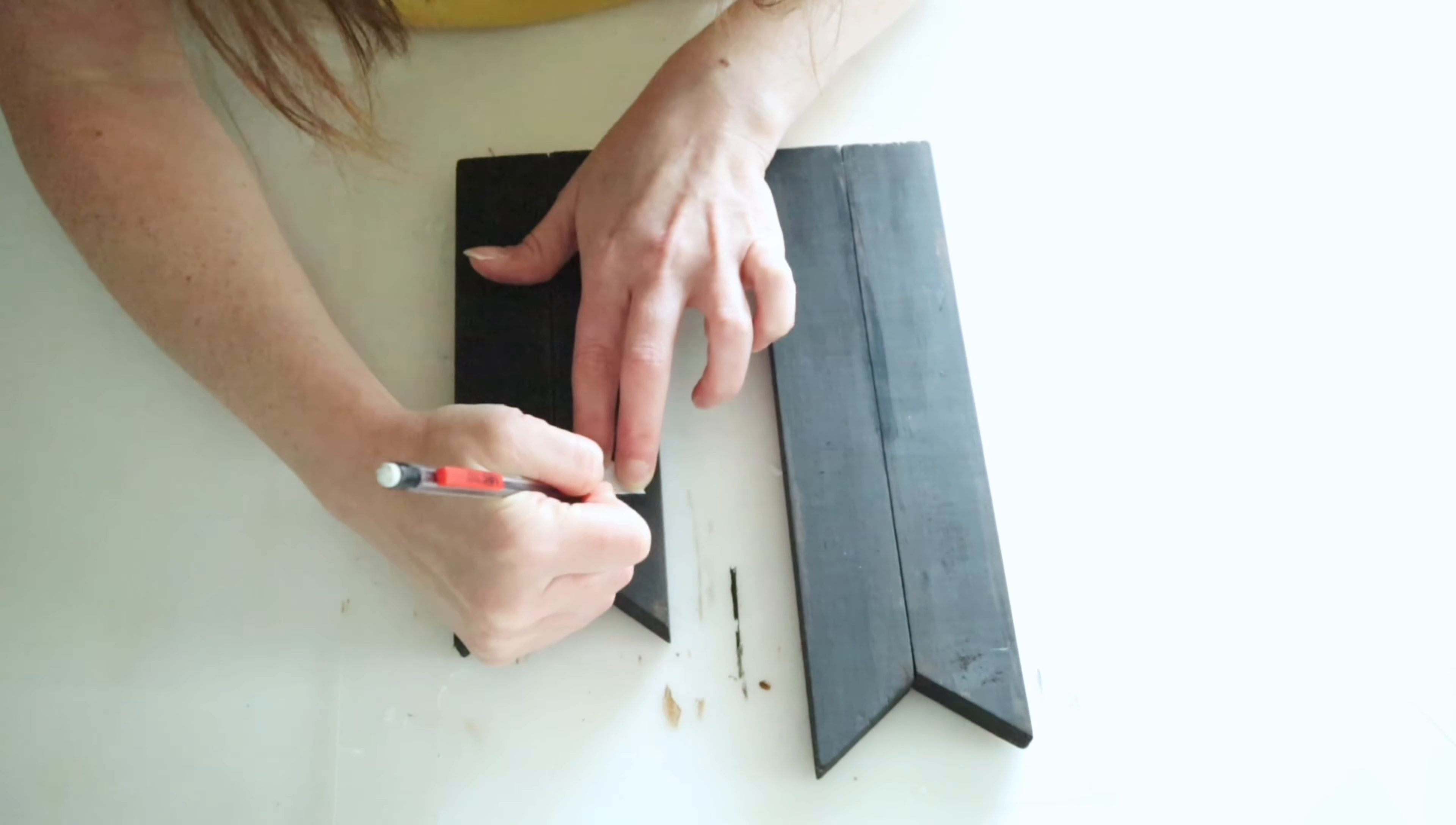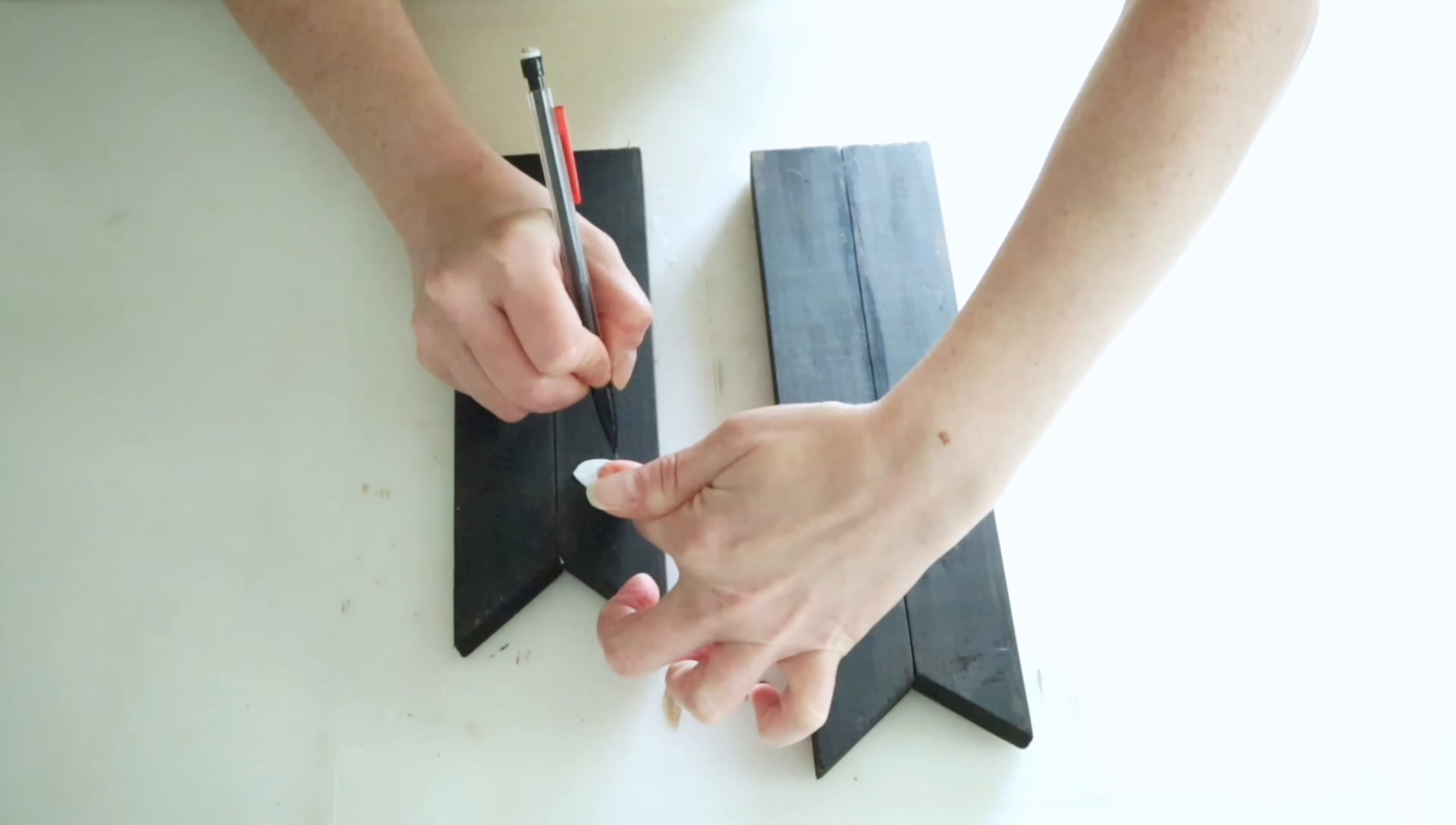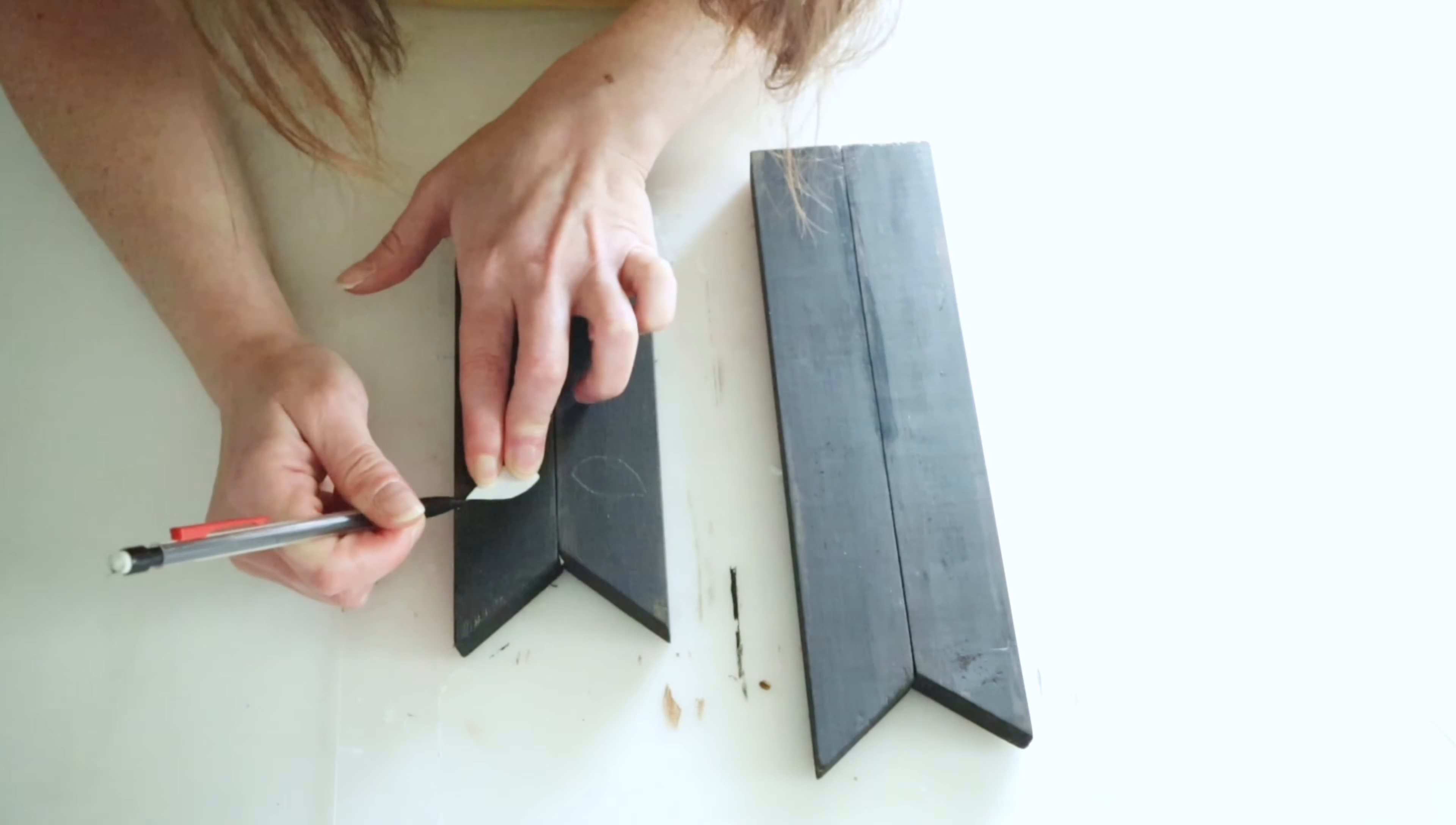For the eyes, I went ahead and just traced out a little template on just a regular piece of paper and then that's what I'm going to use to make the cat eyes.